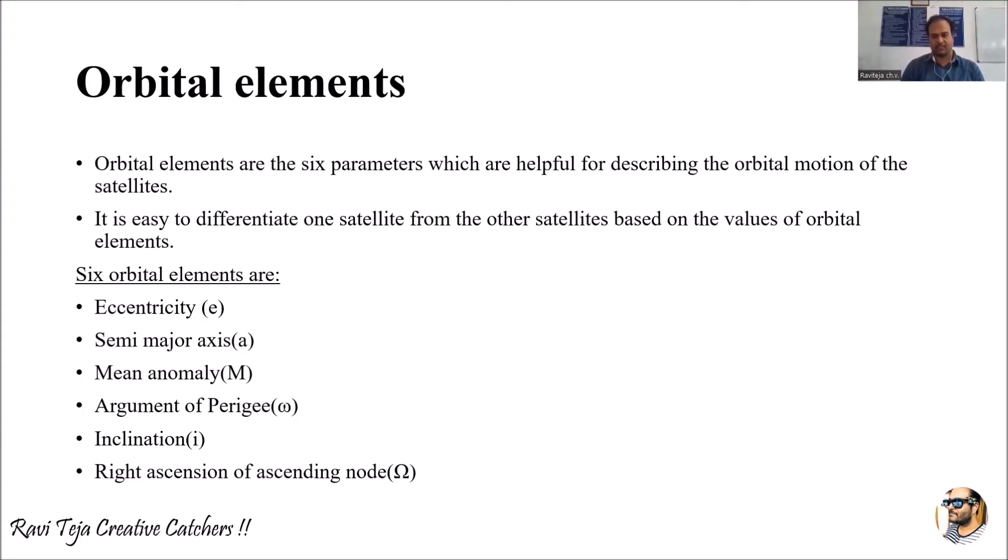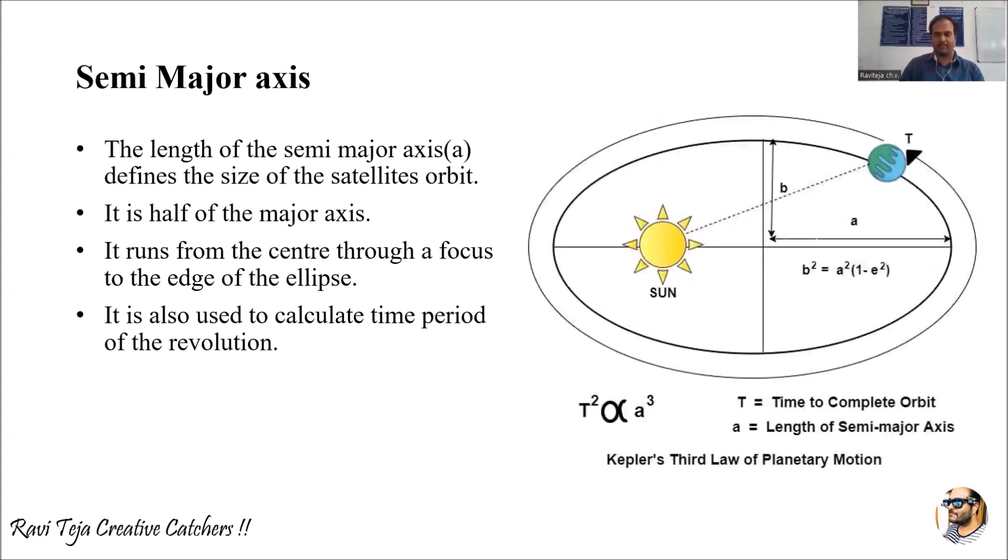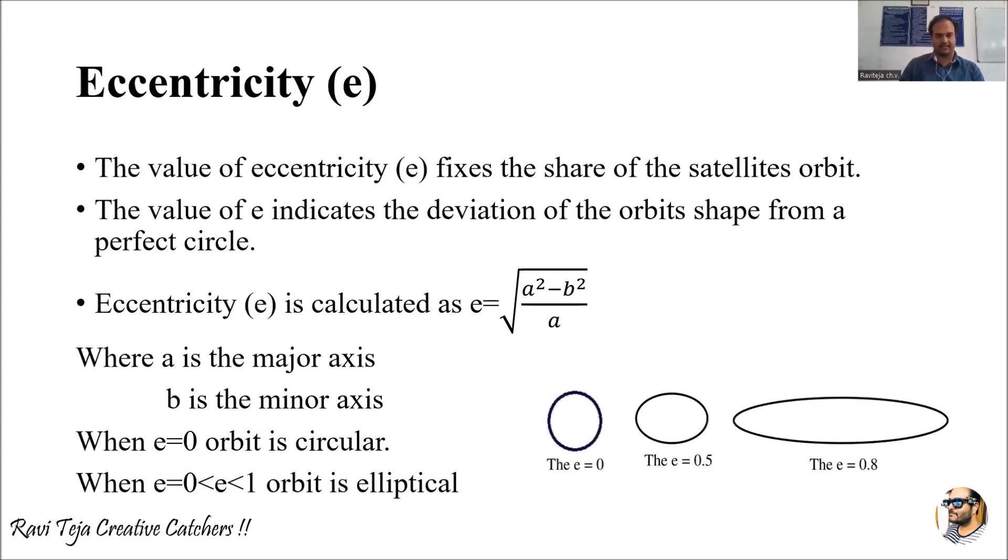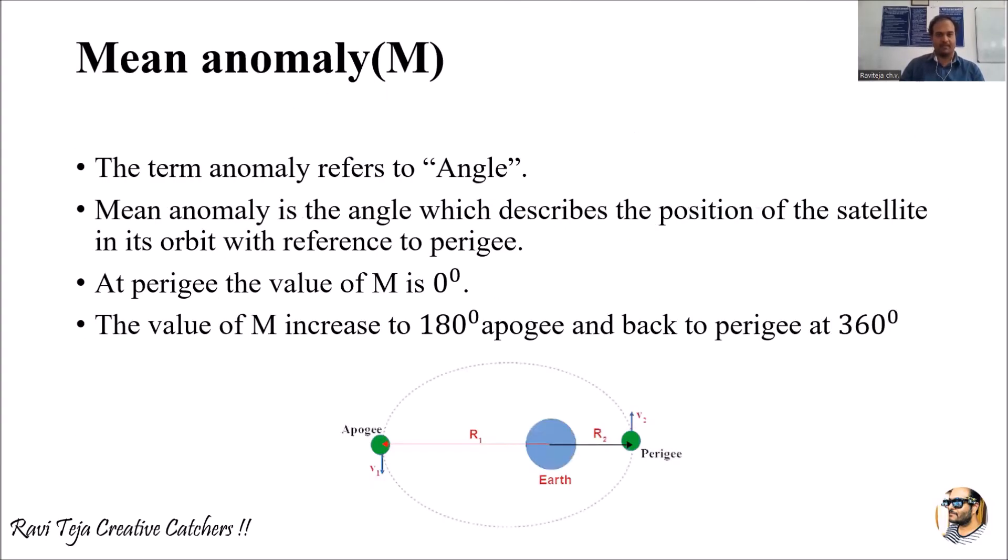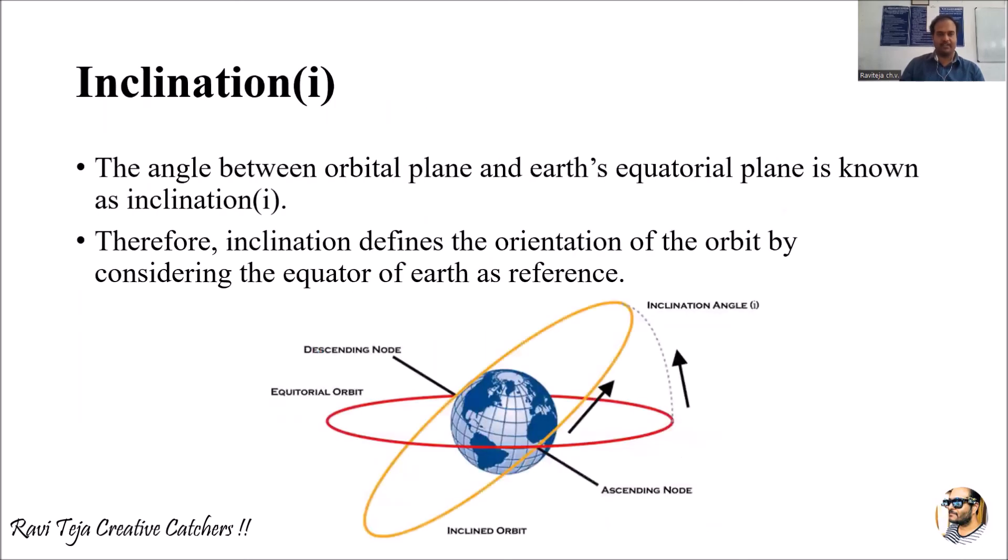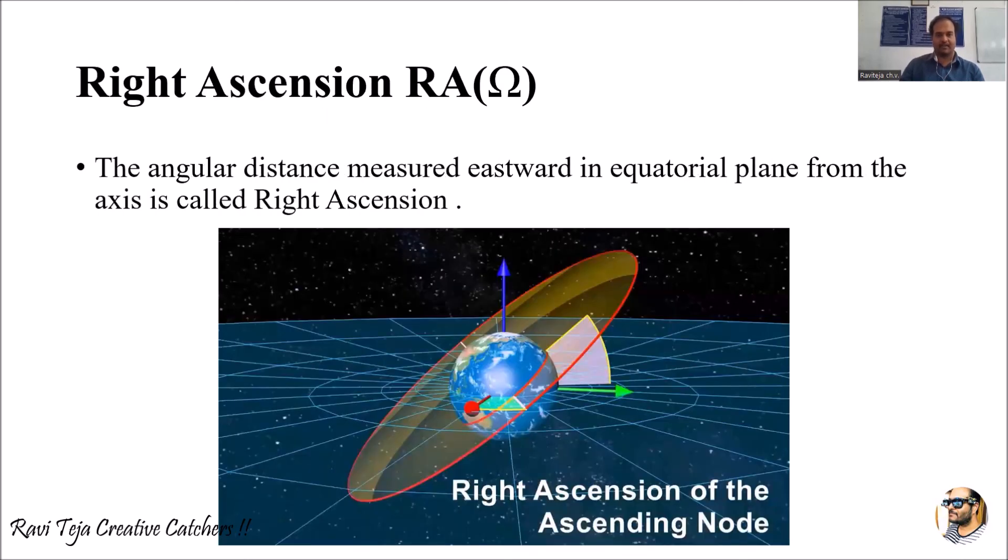You can know what are these as I have already posted a video. So semi-major axis, eccentricity, mean anomaly, argument of perigee, inclination, and right ascension node - these are the six elements.